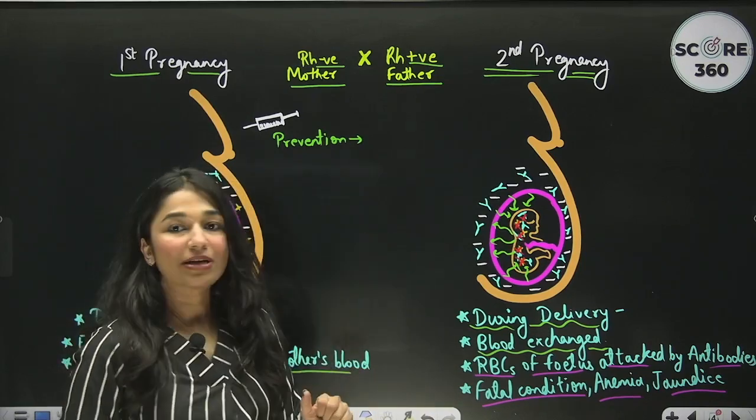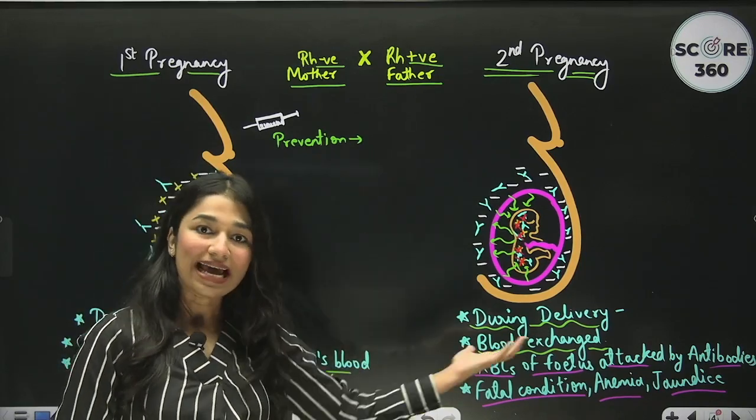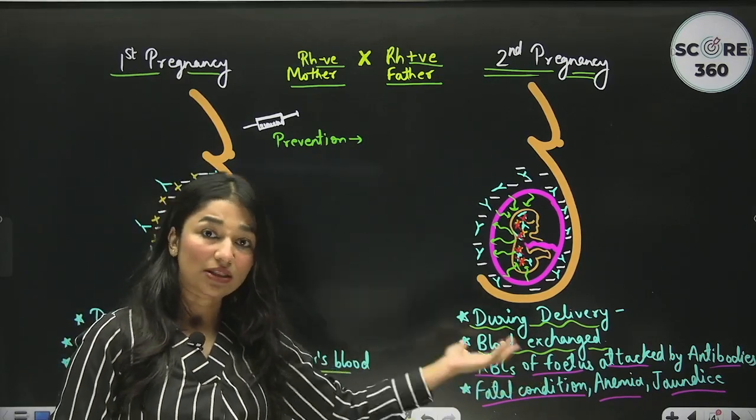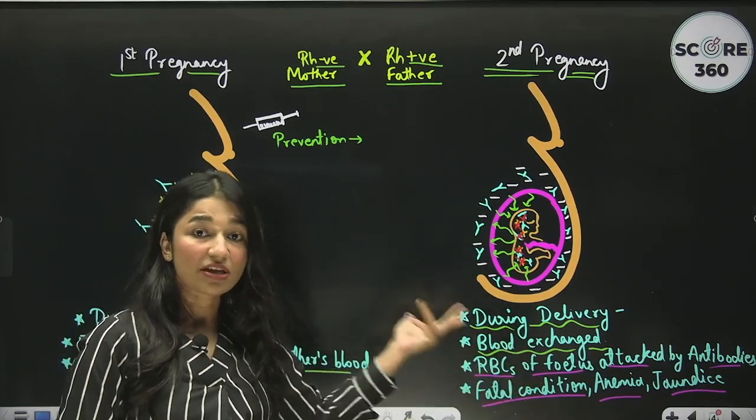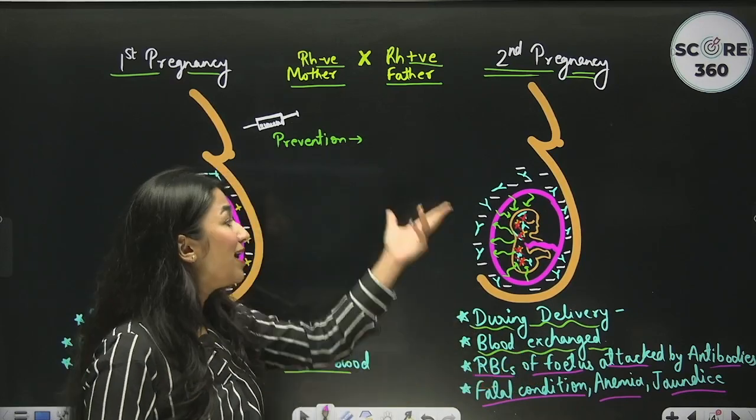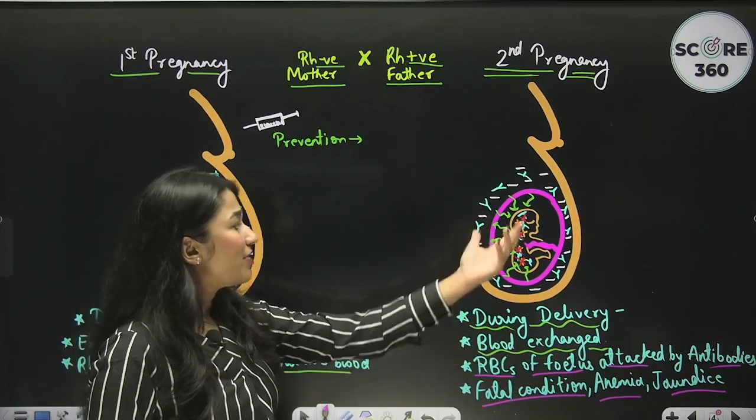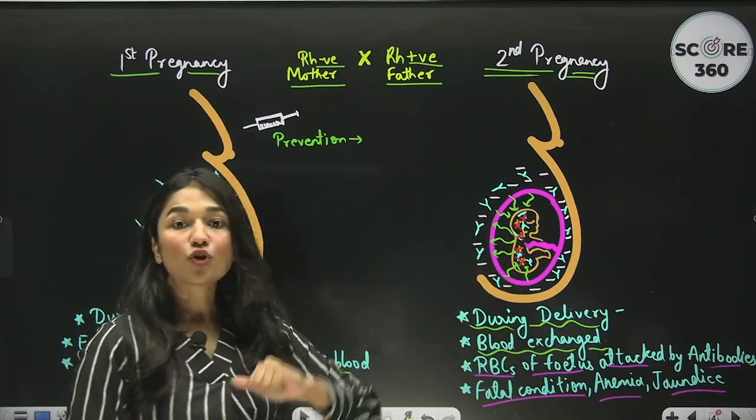So this is what happens during subsequent deliveries: the condition can be fatal, and there can be severe anemia and jaundice in the fetus.